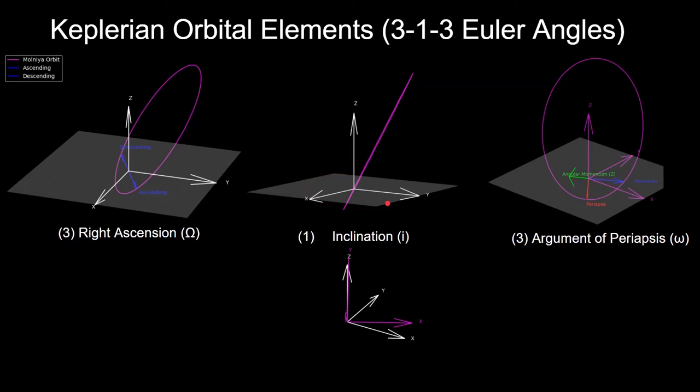The next rotation is the inclination, which is the angle between the equatorial plane and the orbit itself. This is a rotation about the vector pointing from the center of the Earth to the ascending node, which is the X axis in this intermediate frame. The third Euler angle is the argument of periapsis, which is the angle describing the rotation from the ascending node to the periapsis point of the orbit. It is a rotation around the angular momentum vector of the orbit, which is the Z axis. In this case, it's 270 degrees since it goes all the way around here.